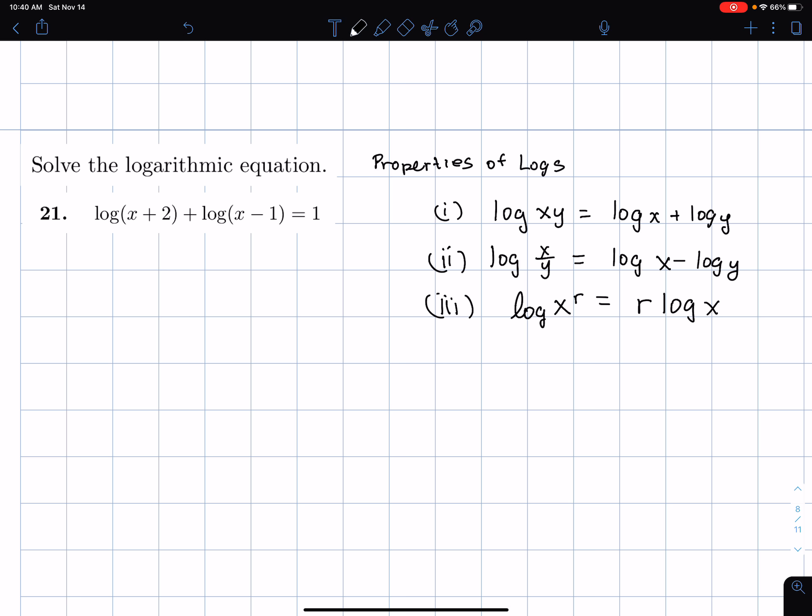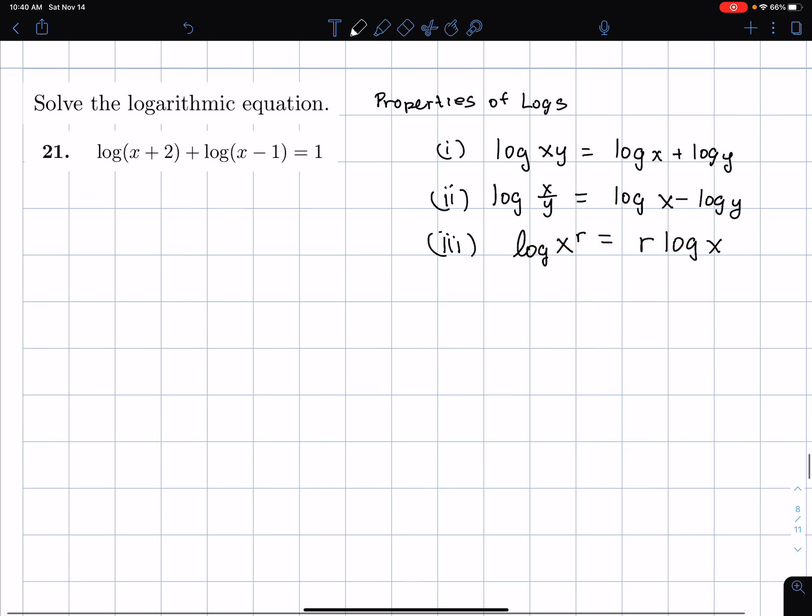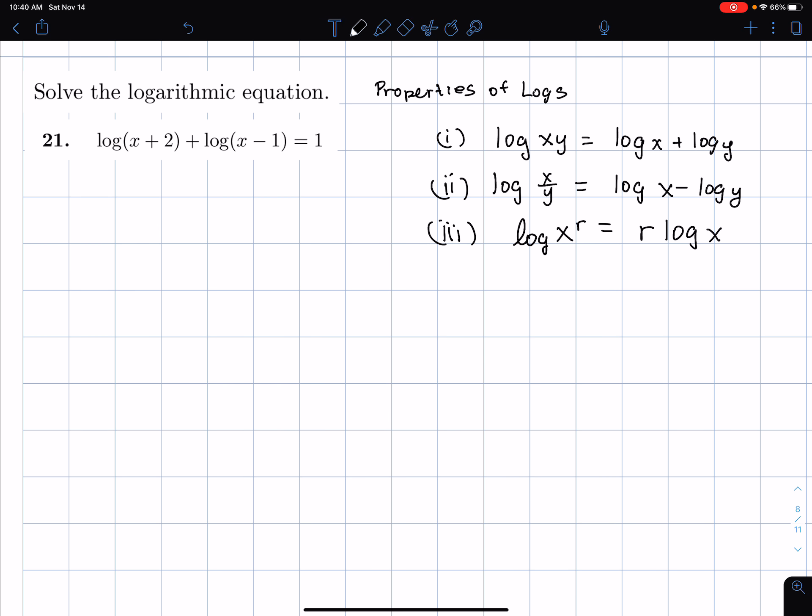Third one, we're not really going to use for here, but okay, let's keep going. So I have these properties. What I'm going to first do is combine by using property number one. So I'm going to write this as log of (x+2)(x-1) equals one.